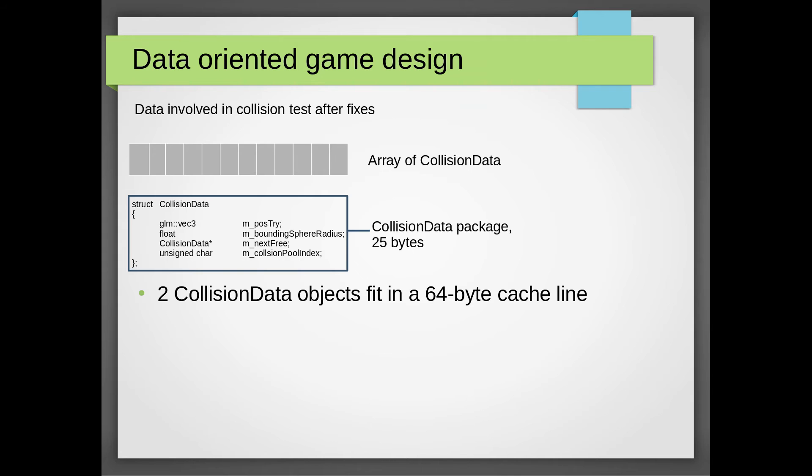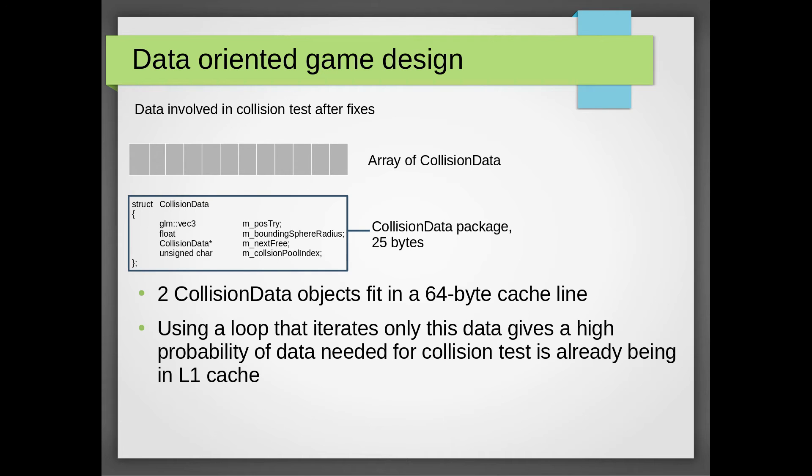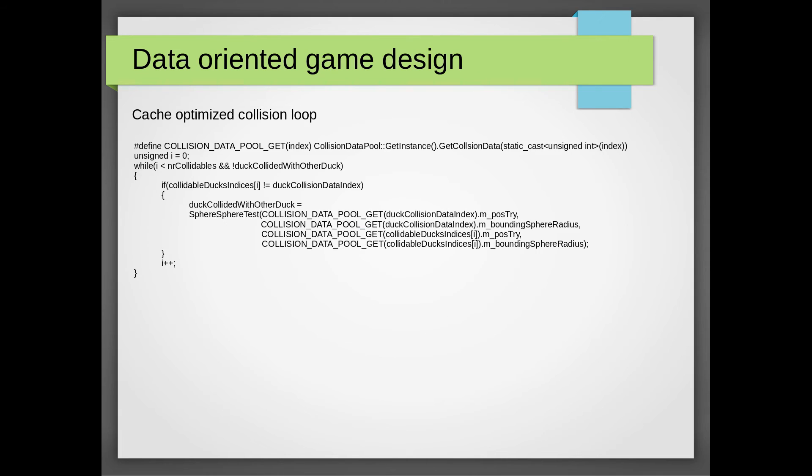This means that we can get two collision data objects into a single cache line. So when we ask for one we will get the next one as well. As we iterate through this data there is a high probability that the data we need to work on is already in our L1 cache.